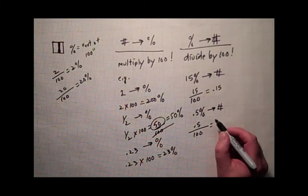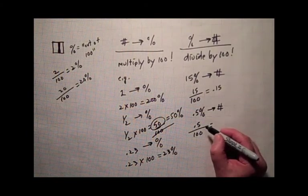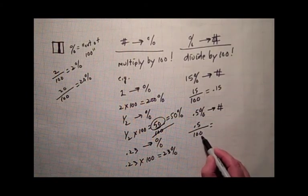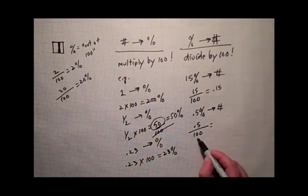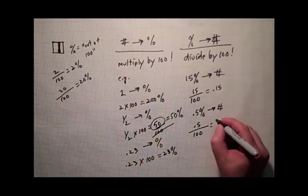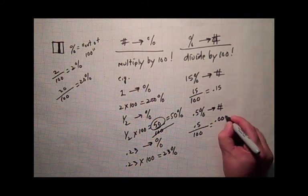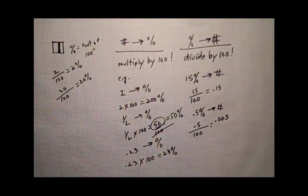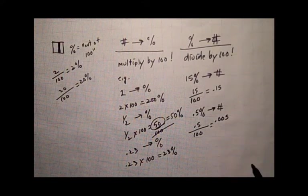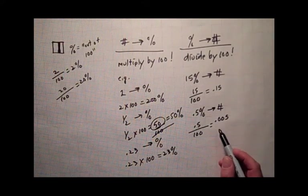All I have to do is move the decimal point two places to the left using the division by hundreds or tens or any other multiple of ten rule. So this becomes 0.005. Not bad. And that's all there is to working with the very fundamental ideas of percents.